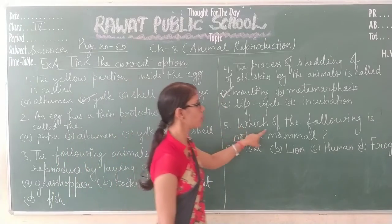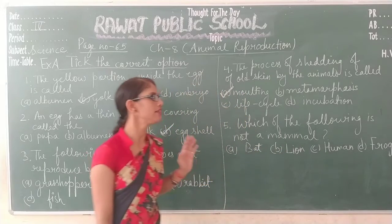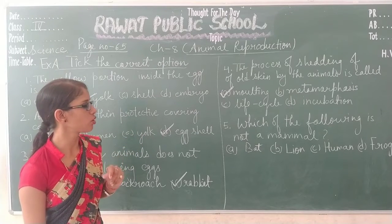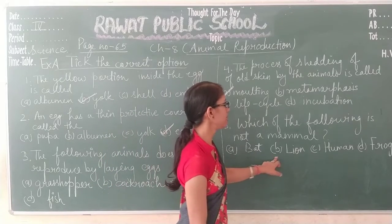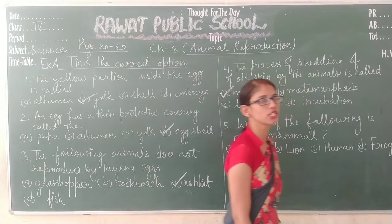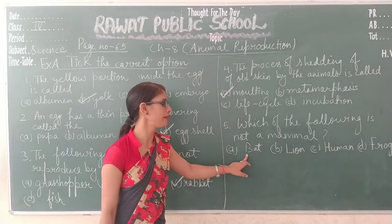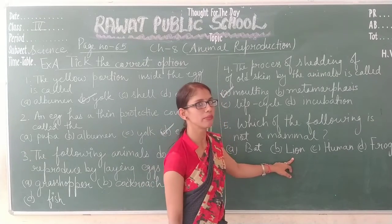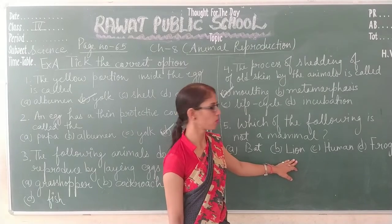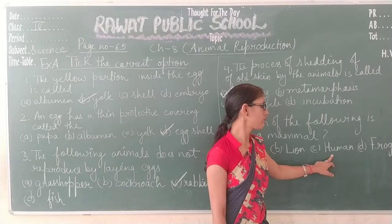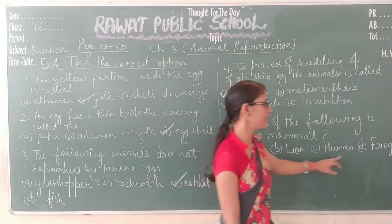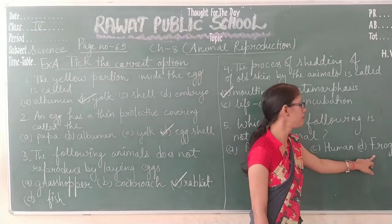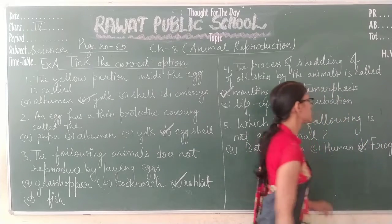Question 5 is: which of the following is not a mammal? Options are A: bat, B: lion, C: human, and D: frog. Bat is a mammal that can fly. Lion is a terrestrial mammal that gives birth to babies and feeds them with its own milk. Human is also a mammal that gives birth to young ones of their own kind. Frog is an amphibian that lays eggs — so frog is not a mammal. D is the correct answer.